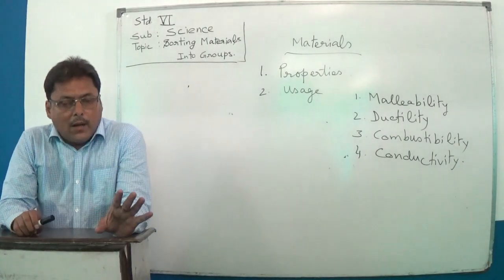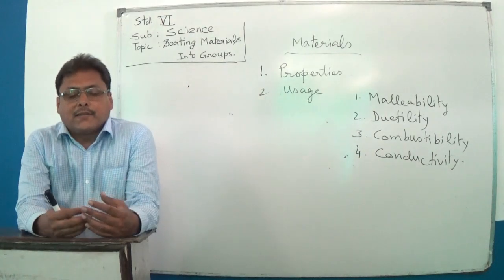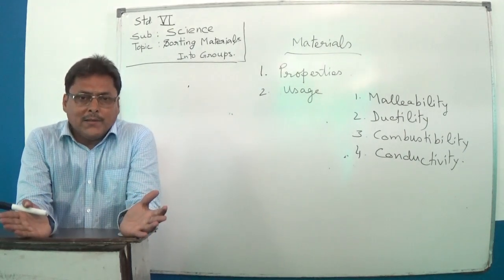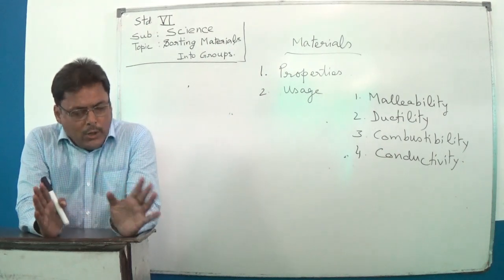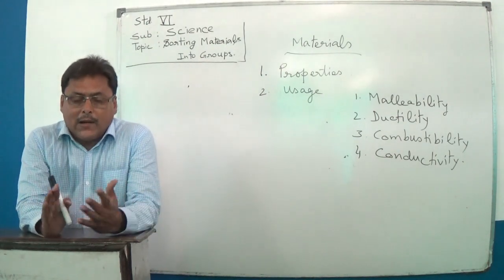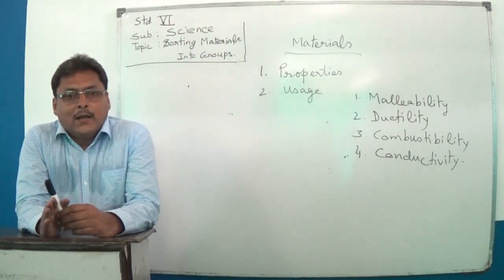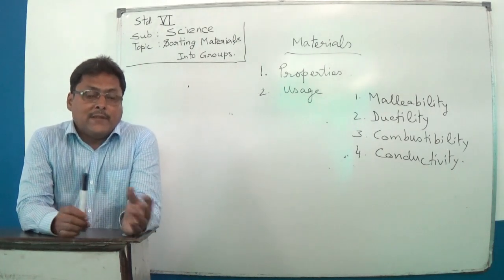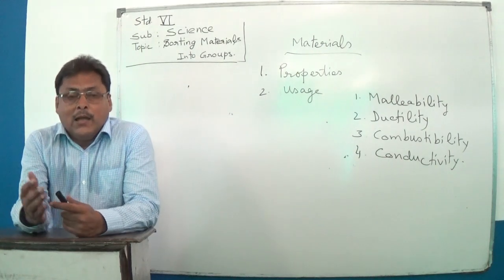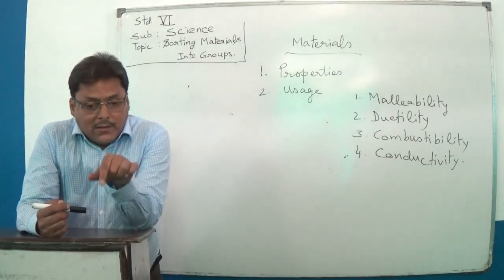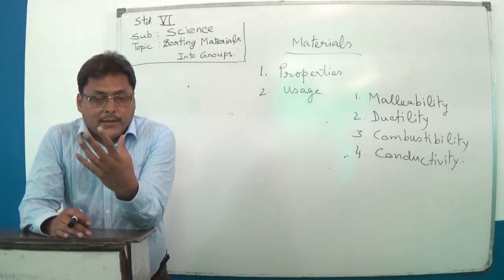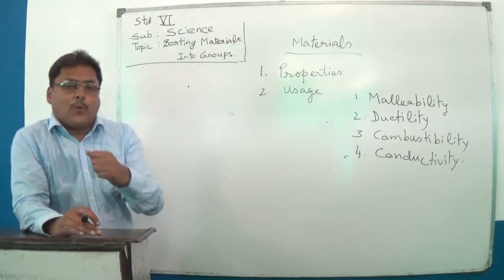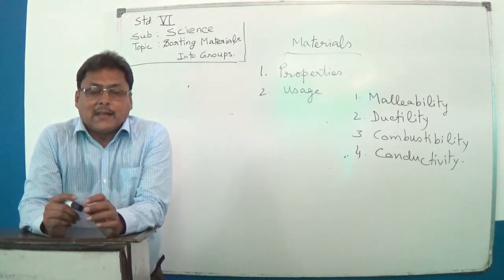The properties you have learnt — in science classes we call them physical properties, and we differentiate them from chemical properties. In the class you are now in, you don't need to differentiate too much. As you go upward in your studies, your science will branch into physics and chemistry. Physical properties will be dealt with in physics, and chemical properties in chemistry. Now let us discuss some chemical properties of each material.